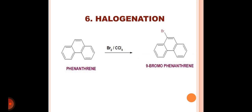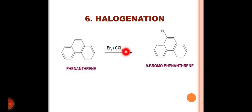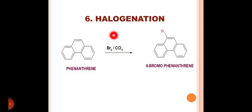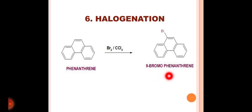The next reaction is the halogenation reaction. Phenanthrene on reaction with bromine in the presence of carbon tetrachloride undergoes the bromination reaction. The bromine ion generated by the reaction of bromine and carbon tetrachloride attaches itself at the most favorable 9th position to carry out the electrophilic substitution reaction and thus forms 9-bromophenanthrene.